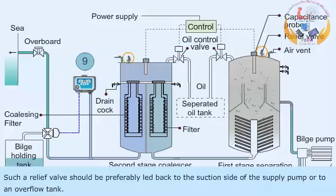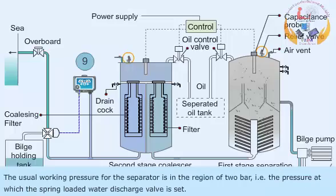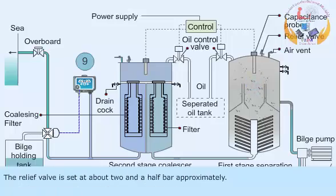Such a relief valve should preferably be led back to the suction side of the supply pump or to an overflow tank. The usual working pressure for the separator is in the region of 2 bar, which is the pressure at which the spring-loaded water discharge valve is set. The relief valve is set at approximately 2.5 bar.